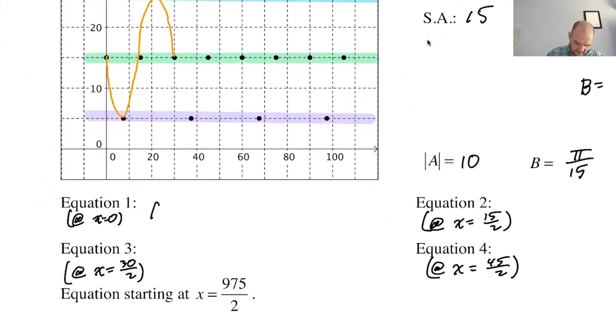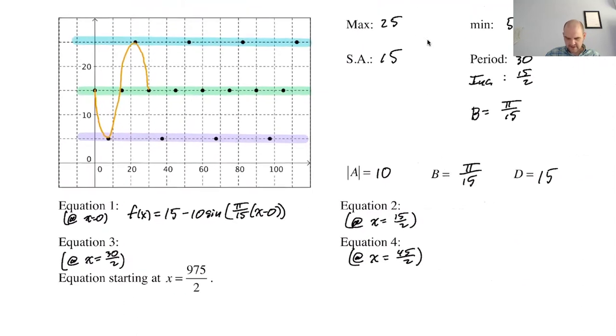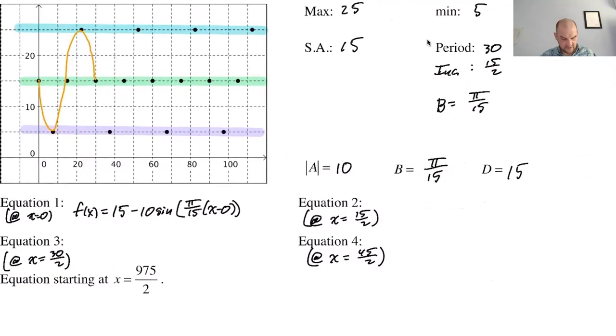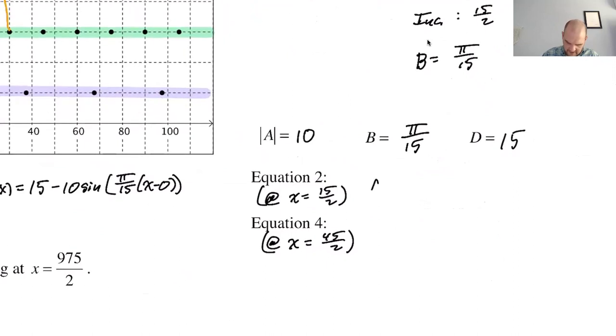All right, so what do we got here? Negative sine. So f(x) is going to be, I'm going to do this one weird. I'm going to say 15 sinusoidal axis, and then I can go minus 10 sine, and then π over 15, I think, x minus zero. So lead with the sinusoidal axis. Sometimes that makes sense. I especially like doing that when the value of A is negative. I don't know why. So like here, I would also like to do that.